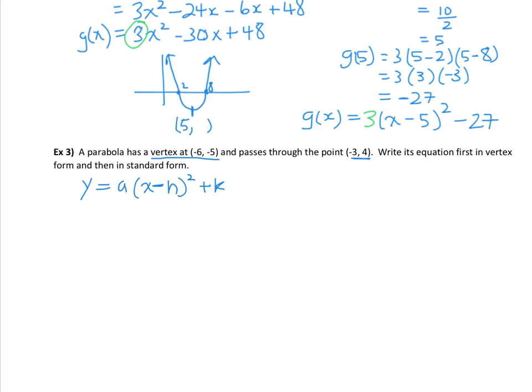Our first step is sub in that vertex where the h is and where the k is. We're going to have x take away negative 6, which becomes a plus 6, and then we have a plus negative 5 or just negative 5. I'm just going to fix that up. I'm just going to write that as x plus 6. So x take away 6 becomes x plus 6. Switching that sign there.